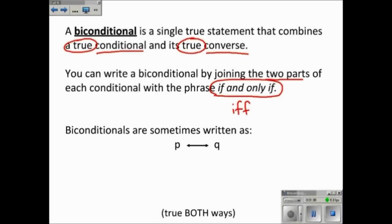Notice that a conditional was abbreviated P arrow Q, and the converse was abbreviated Q arrow P. Since they're pointing at each other, you can write a biconditional with P double arrow Q, because both parts are true — so it's true both ways.